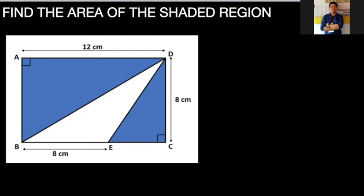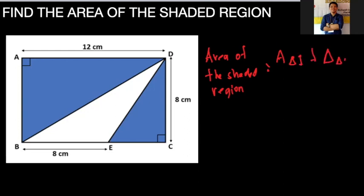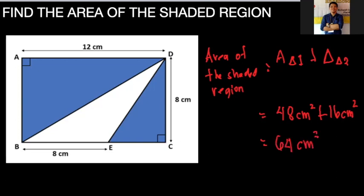To find the total area of the shaded region, we add the area of Triangle 1 plus the area of Triangle 2. Area of Triangle 1 is 48 centimeters squared and area of Triangle 2 is 16 centimeters squared. Adding them gives us 64 centimeters squared, which is the area of the shaded region.